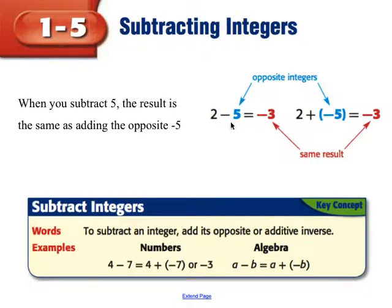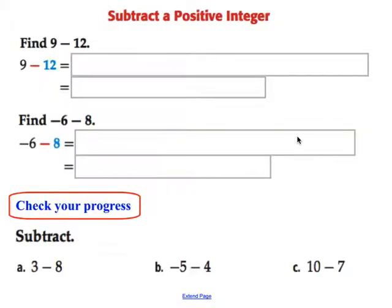So whenever you see a subtraction sign, that's the same as adding negative 5. We will always talk about the number 5 in this example as a negative 5 rather than minus 5. Rather than subtract 5, we're going to think of that as a minus 5. So to subtract an integer, just add its opposite, and that will give us subtraction. Let's take a look at some examples.